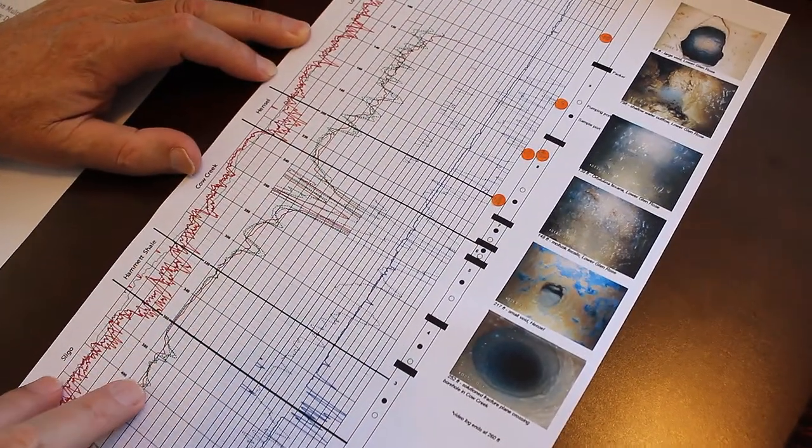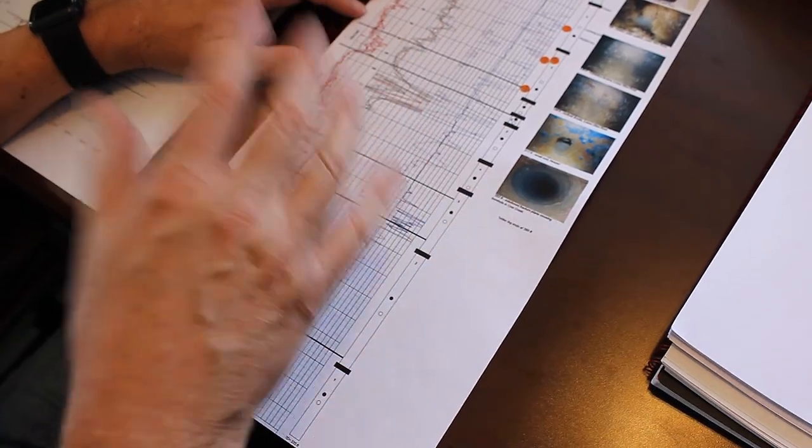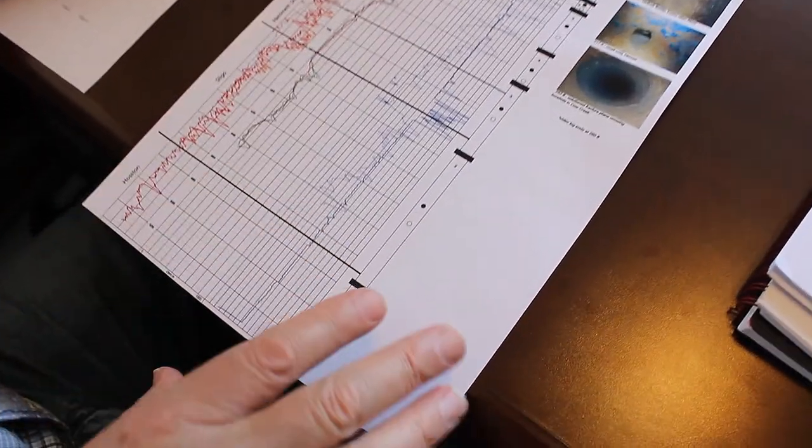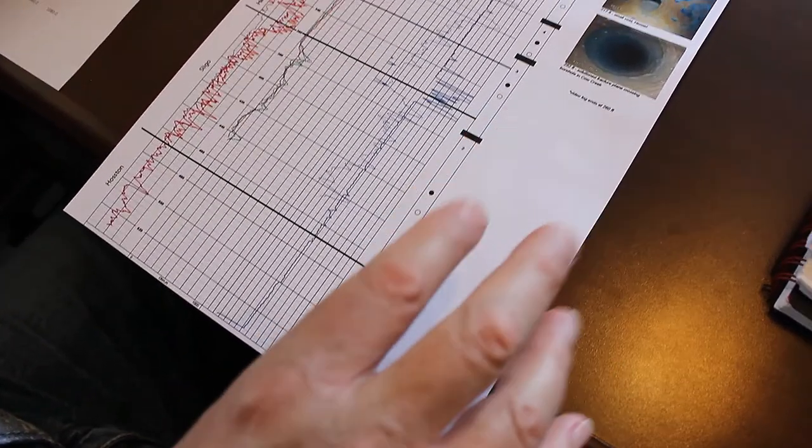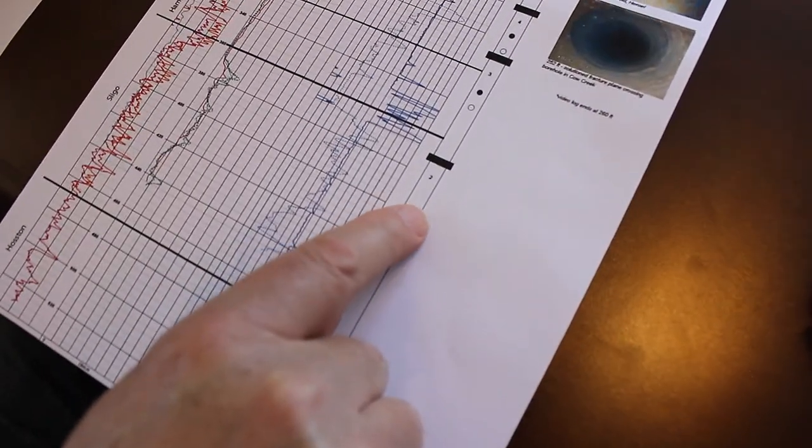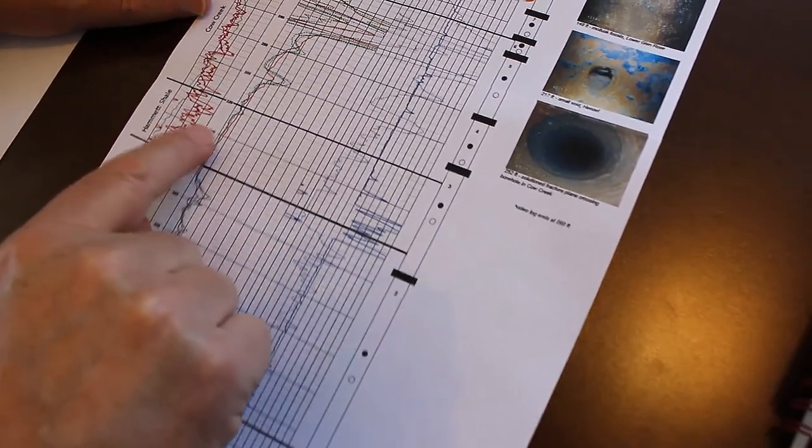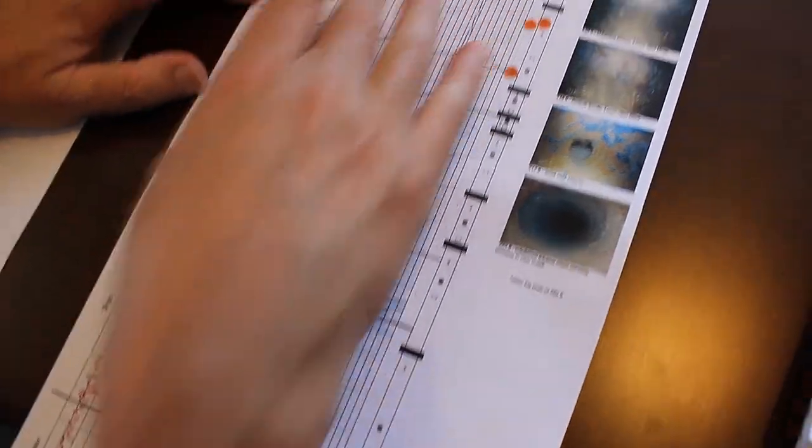These lines here indicate various parameters about the aquifer and the rocks we're drilling through. From there we set up this well to have ten zones, starting with zone number one in the Hauston formation going up. Two is the Sligo, three is the Hammett Shale, which seals off the Lower Trinity from the Middle Trinity.